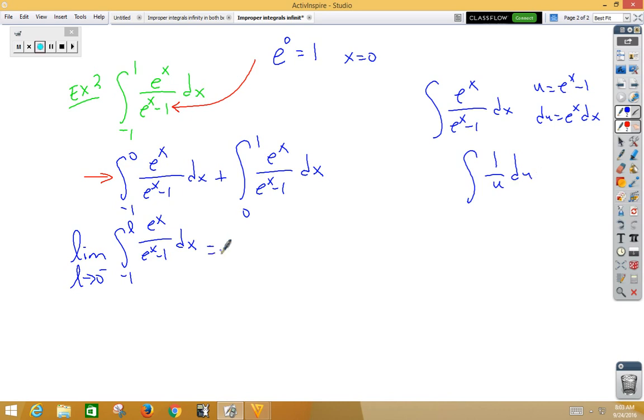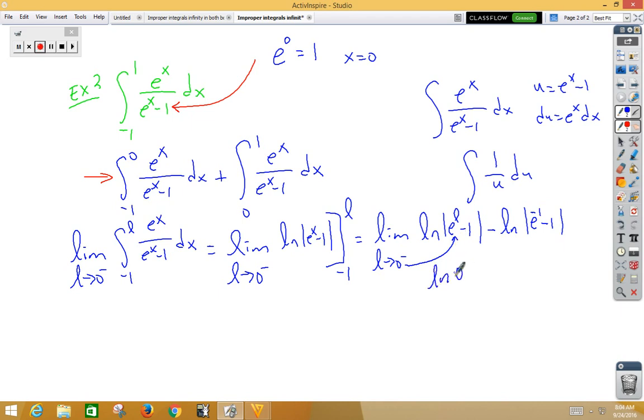So we now have the limit as l approaches 0 from the left side of the natural log of the absolute value of e to the x minus 1 from negative 1 to l. So now we've got the limit as l approaches 0 from the left side of the natural log of the absolute value of e to the l minus 1 minus the natural log of the absolute value of e to the negative 1 minus 1.